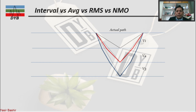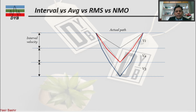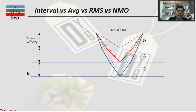Before we go into velocity analysis, let's understand what interval velocity, average velocity, RMS velocity, and NMO velocity are — these are different types of velocity. When we talk about interval velocity, let's say we have three layers. The interval velocity is the individual velocity of each layer — for example, 2000 meters per second for the first layer, 2500 for the second, and 3000 for the third. Interval velocity is separate for each individual layer.